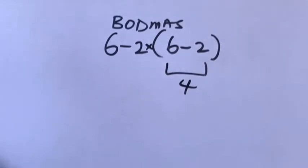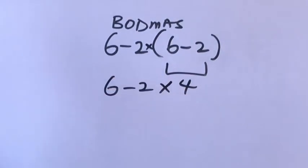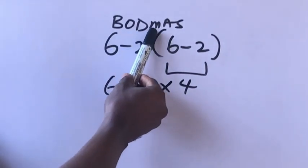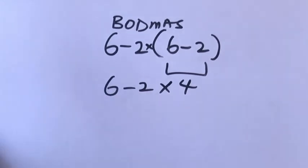So it will be times this two. We have six minus two times four. Now remember in our order of operations, multiplication comes before subtraction because we have two operations here.